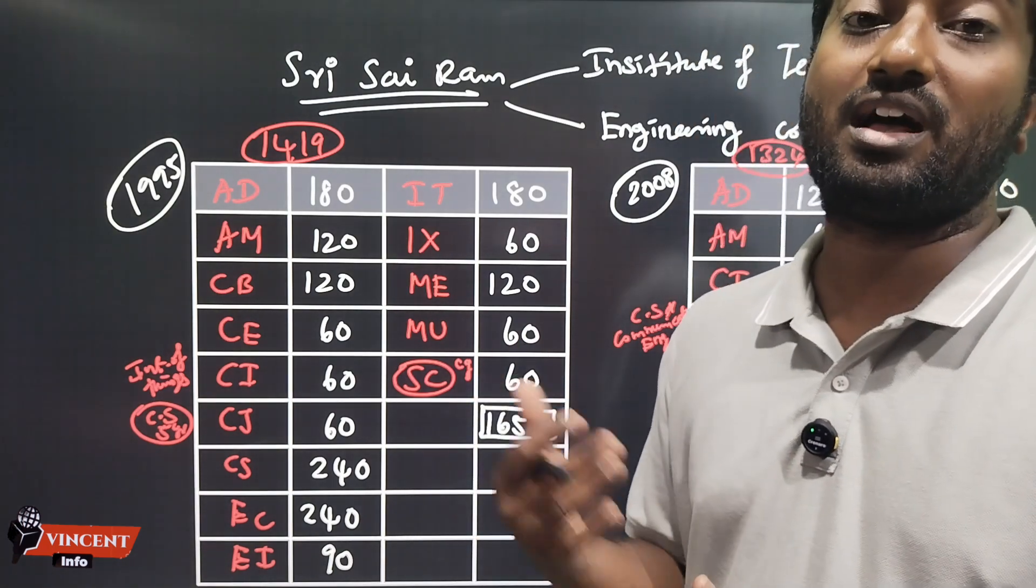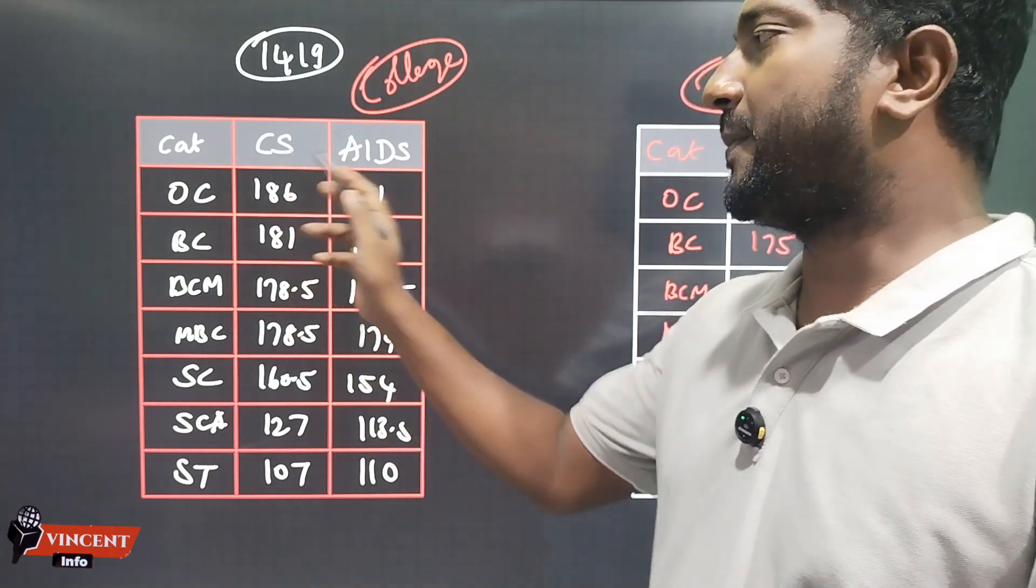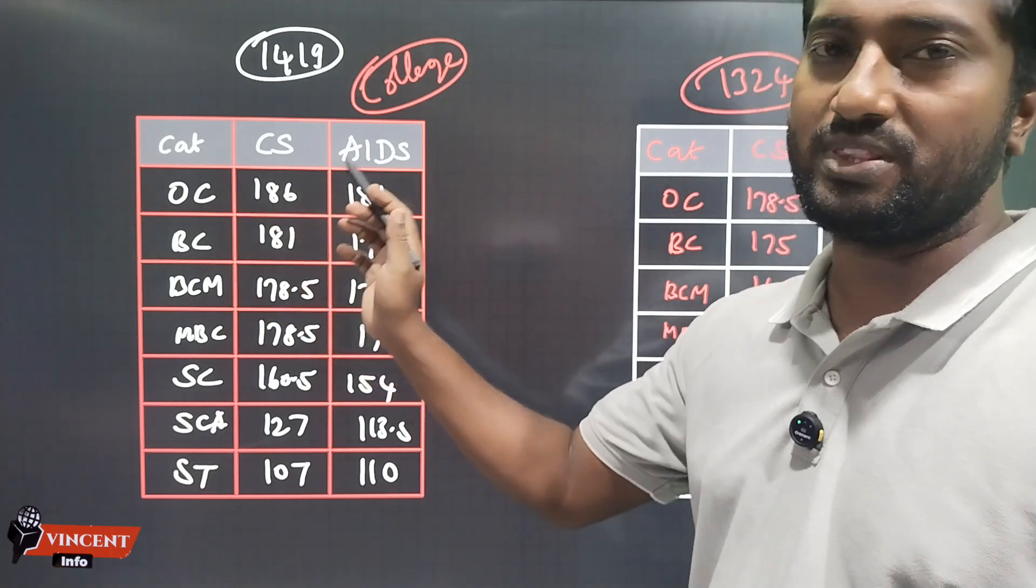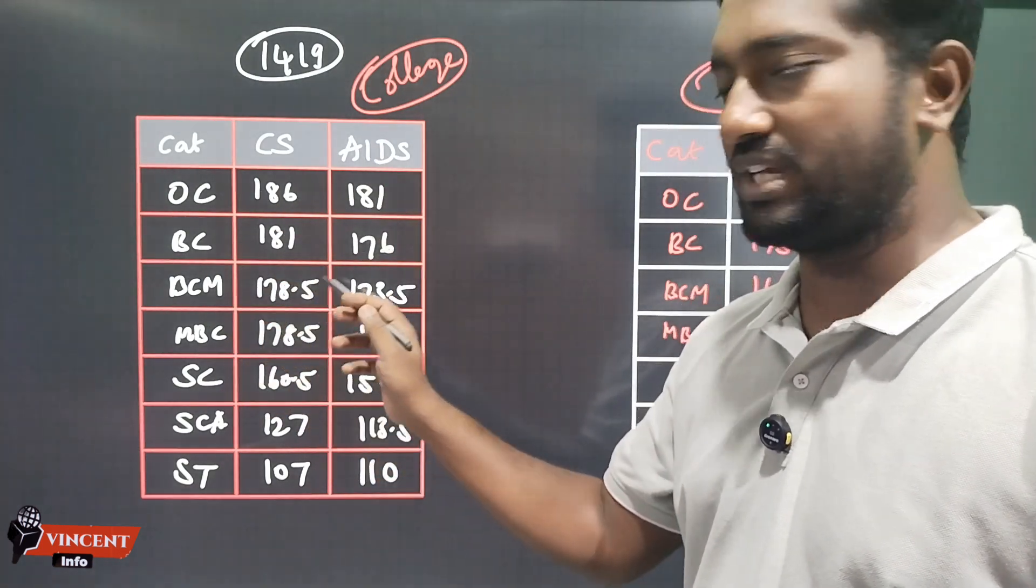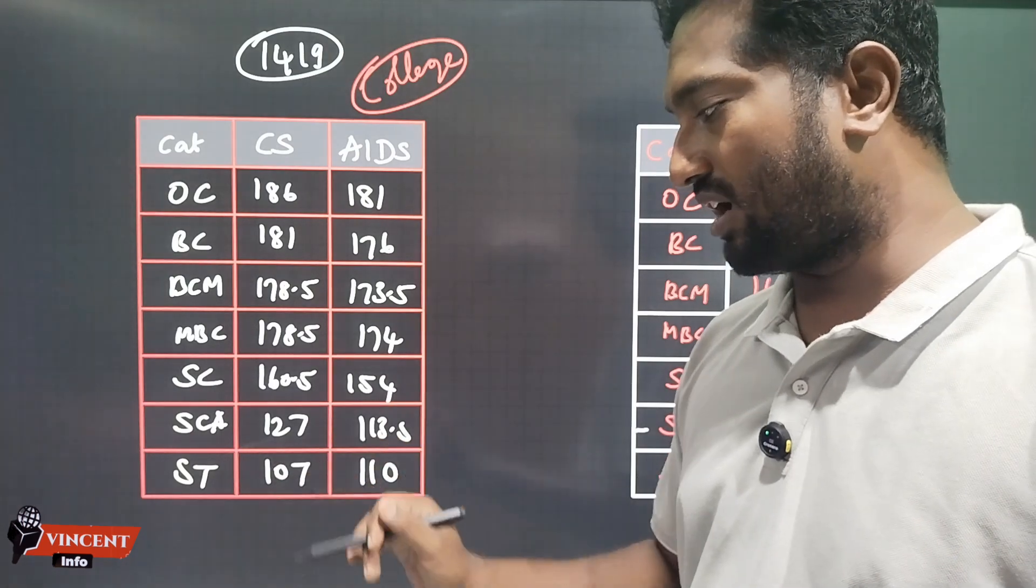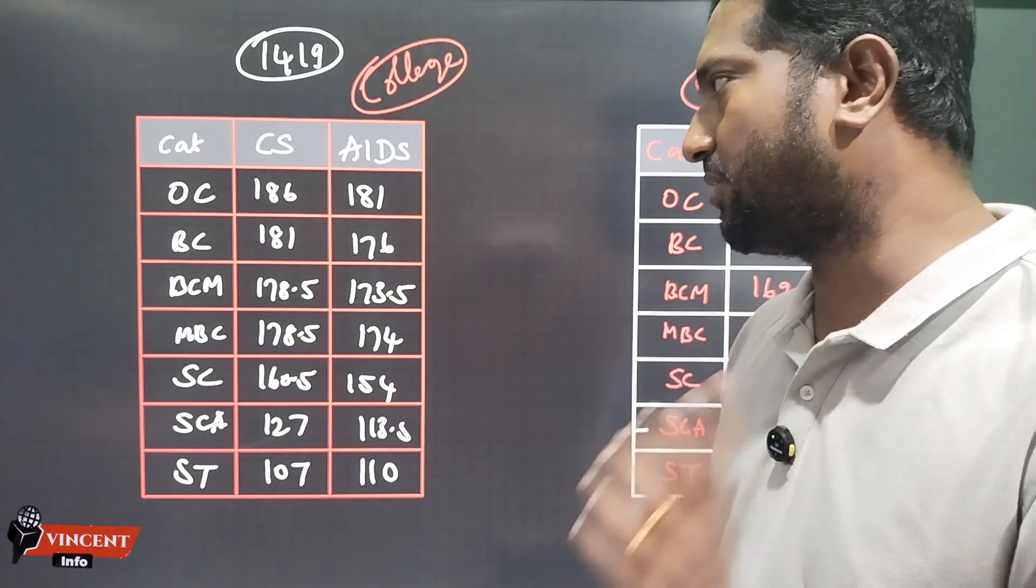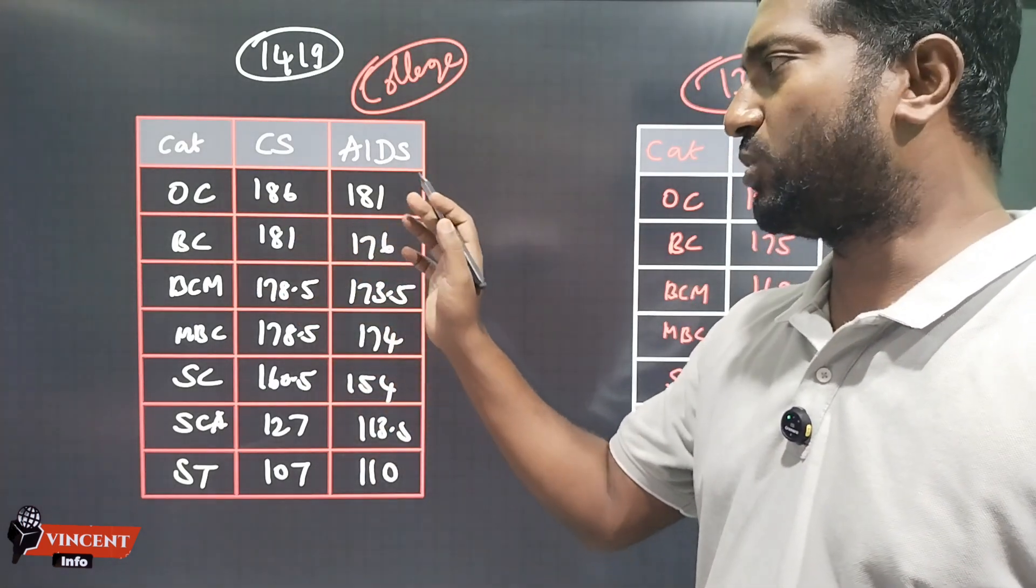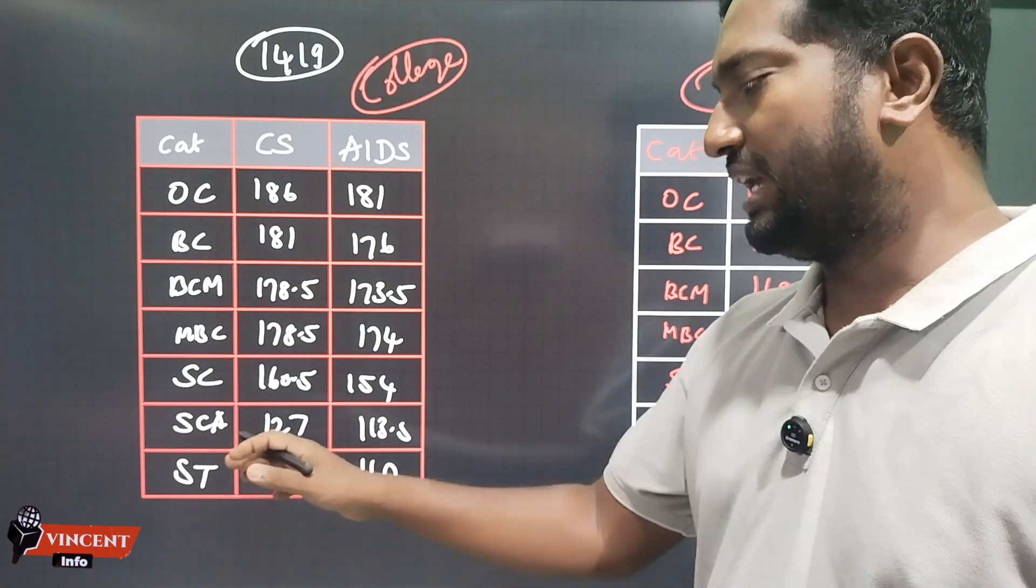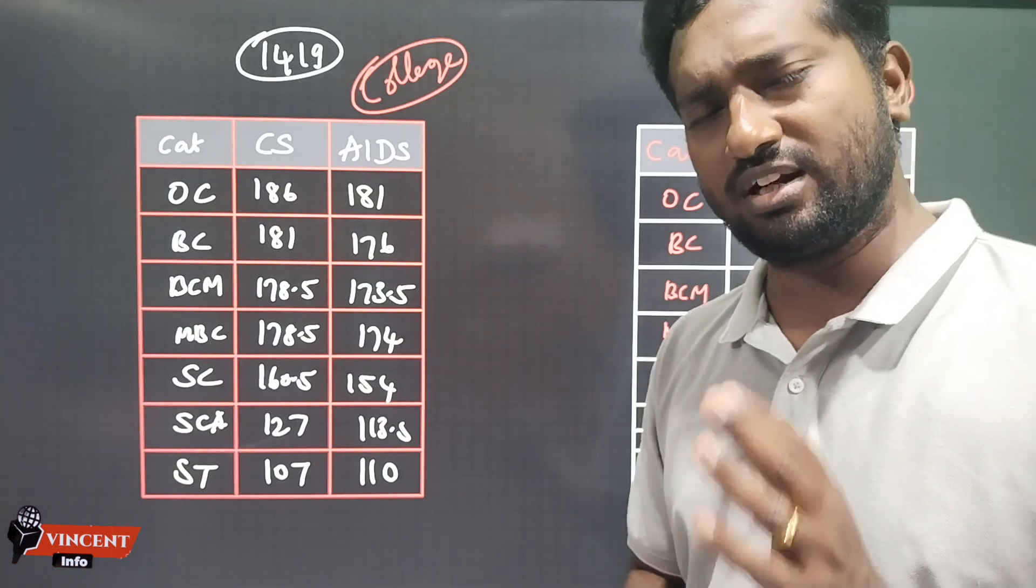The last year closing for AI&DS: OC community is 171 closing. BC is 181. BCM is 178.5. MBC is 178.5. SC is 160.5. SCA is 127. ST is 147. For AI&ML: OC is 181, BC is 176, BCM is 173.5, MBC is 174, SC is 154, SCA is 113.5, ST is 110.5. This is the engineering college.